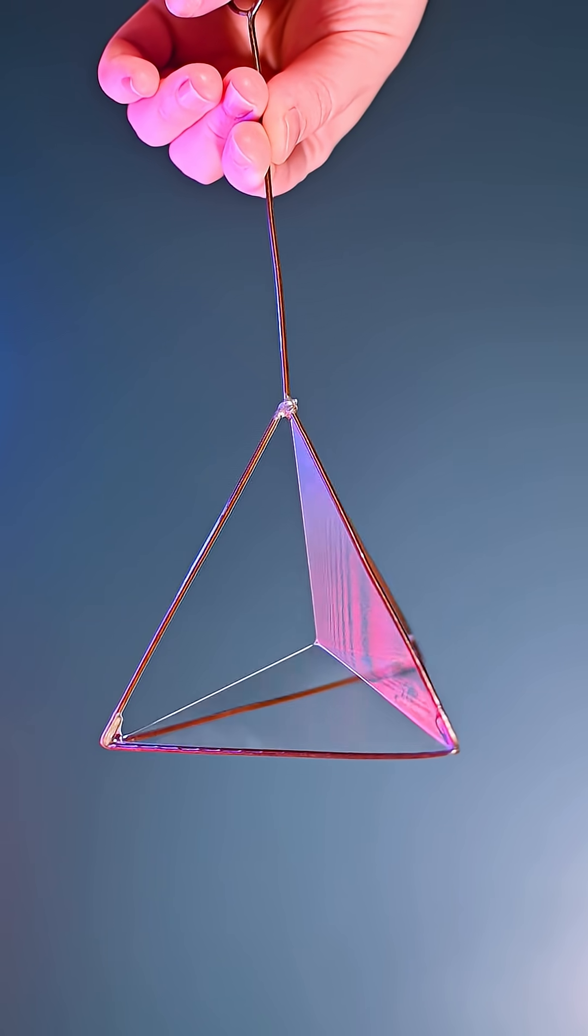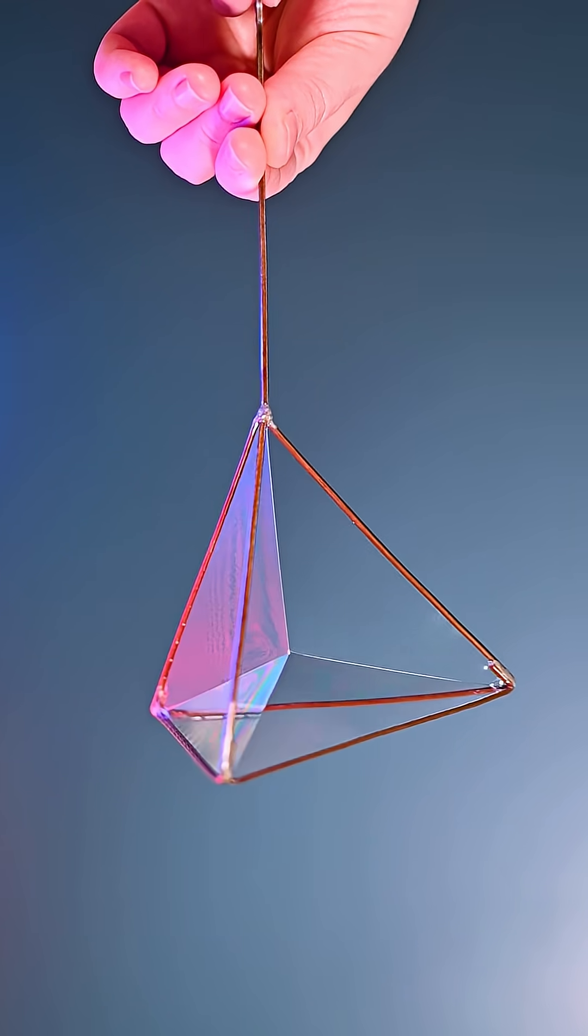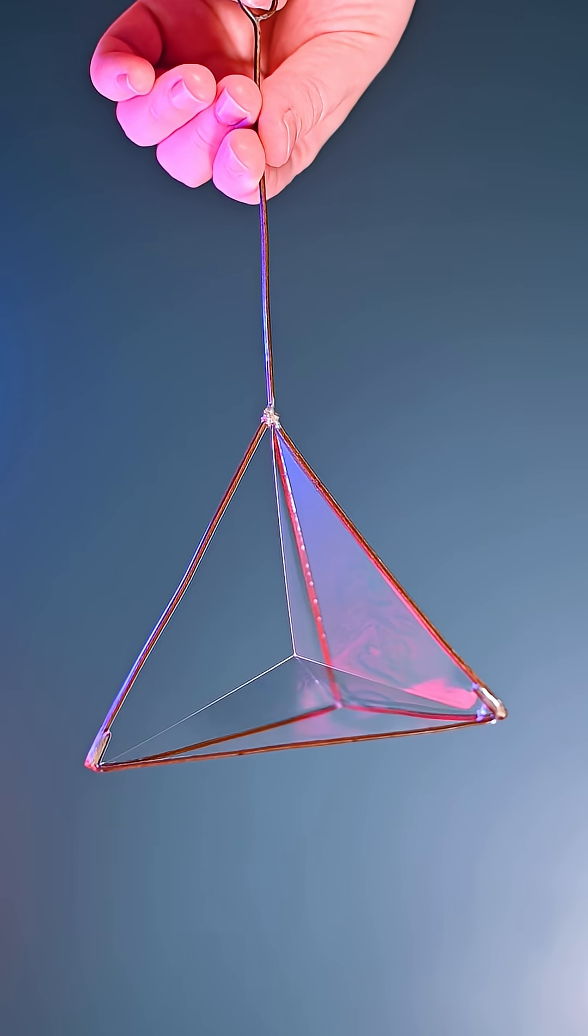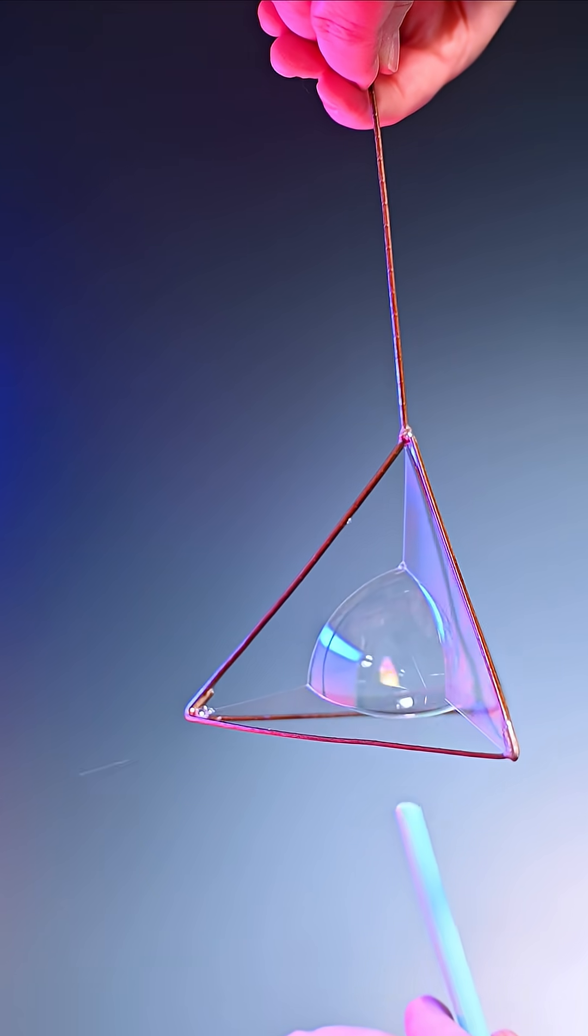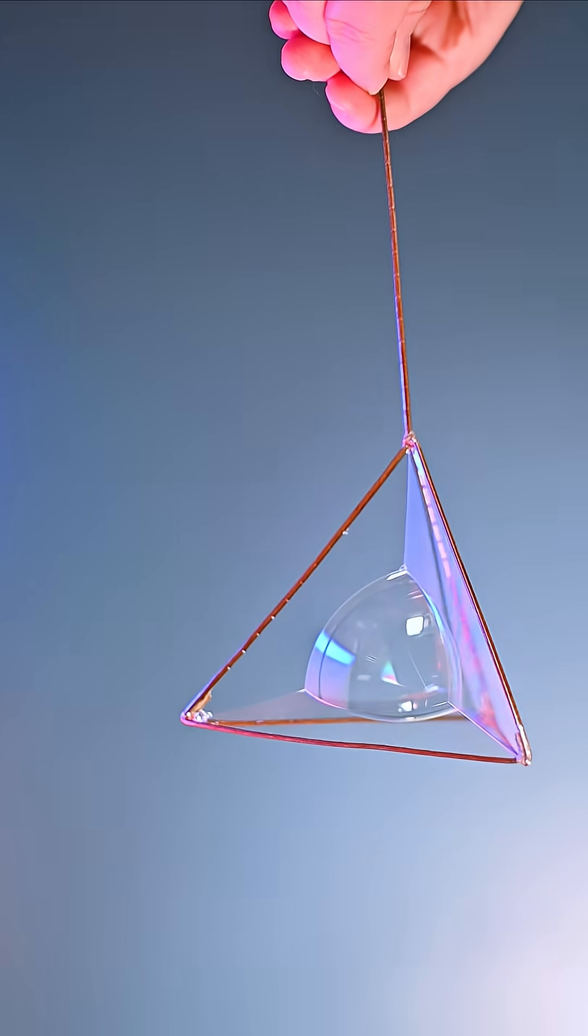So films form these incredible bubbles between wireframes that always try to minimize surface area. The tetrahedron creates this bubble with a vertex in the middle, and if I put a bubble inside it, it's a tetrahedron interior bubble mimicking the wireframe.